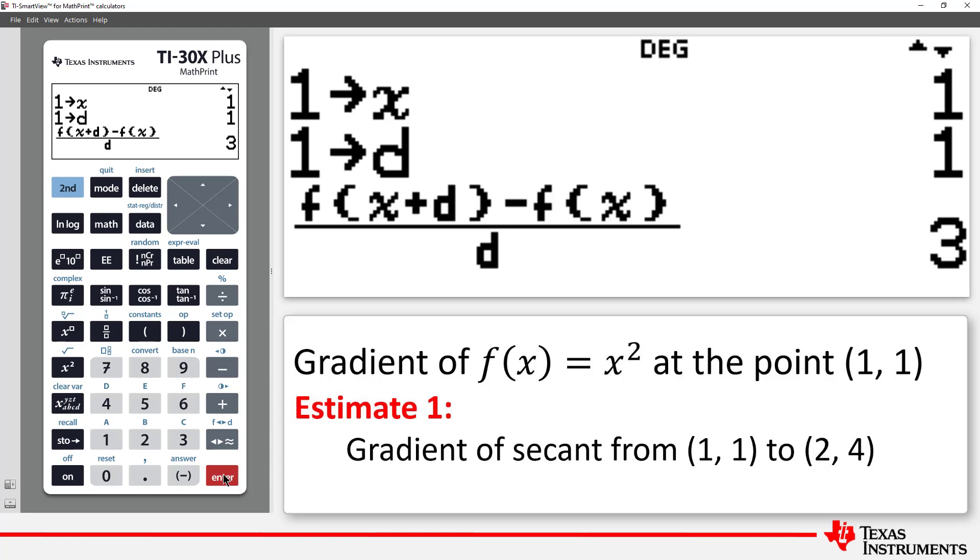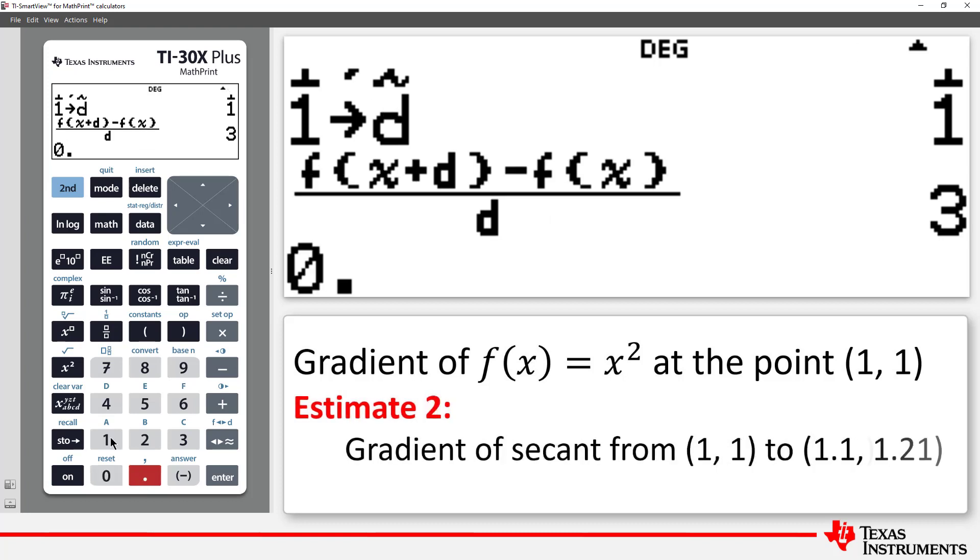So, the gradient of our secant is 3. Now let's explore what happens as d gets smaller. Let's try d equal to 0.1.